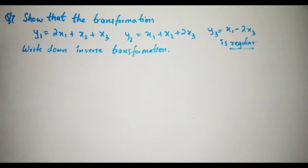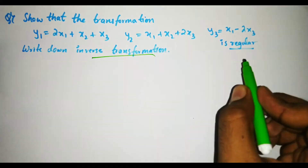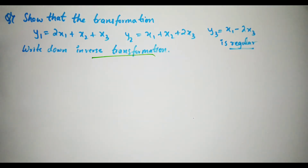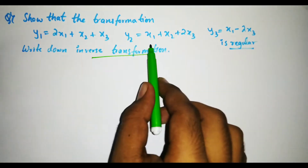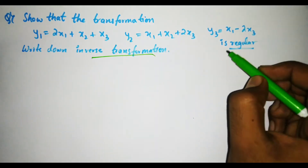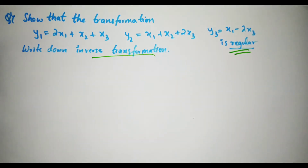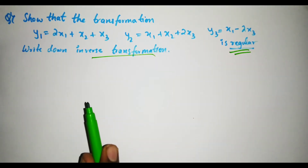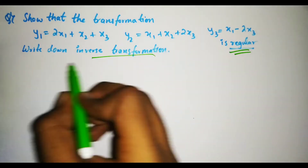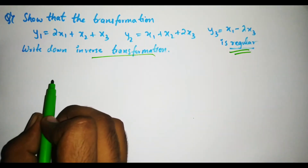In this video we are going to solve some problems based on the inverse transformation as well as on how to show the transformation is regular or irregular. Basically, we have to show the given transformation is regular. For that, we have to show that determinant A is not equal to zero, and then write down the inverse transformation.